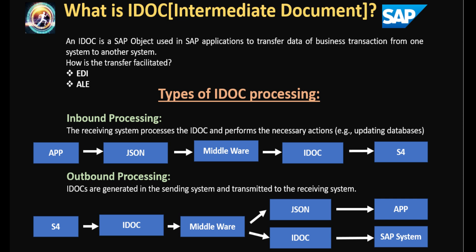Now let's understand outbound processing. The S4 system sends data in the form of IDOC. It goes to the middleware, which converts that IDOC into JSON, or if it's an SAP system, keeps it as an IDOC, and sends it to that particular third party system or SAP system. For example, S4 creates a purchase order and needs to transfer that purchase order number or related information to a third party system — it can send that information using outbound processing IDOC.